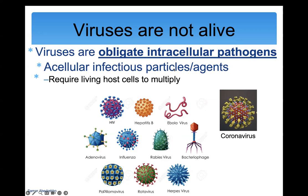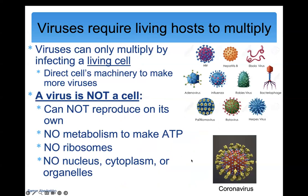We say infectious particles or infectious agents rather than infectious organisms, because the term organism implies something is alive. We can call bacteria an infectious organism, but for viruses we typically say infectious particles or infectious agents. Viruses are not alive but require a living host to multiply, make copies of themselves, or replicate — those all mean the same thing.